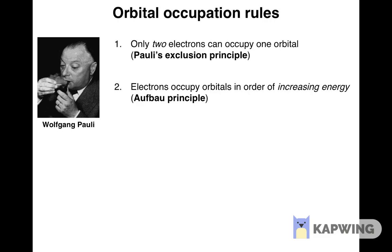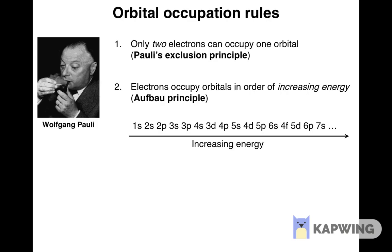We also looked at how to order subshells by increasing energy of electrons that reside in them. The order that we found was 1s — the orbital subshell with the lowest energy — then with progressively higher energies: 2s, 2p, 3s, 3p, 4s, 3d, 4p, 5s, 4d, 5p, 6s, 4f, 5d, 6p, 7s, and so on. If you don't remember how to find this order, please review the video on orbitals.